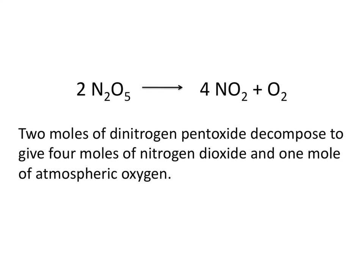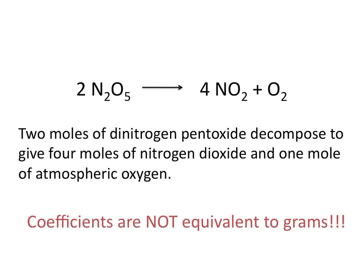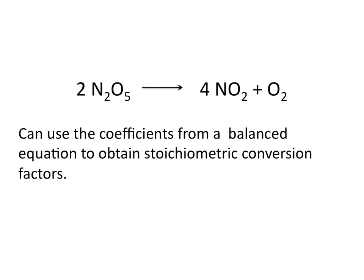We can use this relationship to tell us how much reactant would be required to give a certain amount of product, or how much product would be produced from a certain amount of reactant. It's important to remember, however, that these coefficients are equal to moles or molecules, but they are not equivalent to grams. We use the coefficients in a balanced equation to convert from one reactant or product to another using stoichiometric conversion factors.